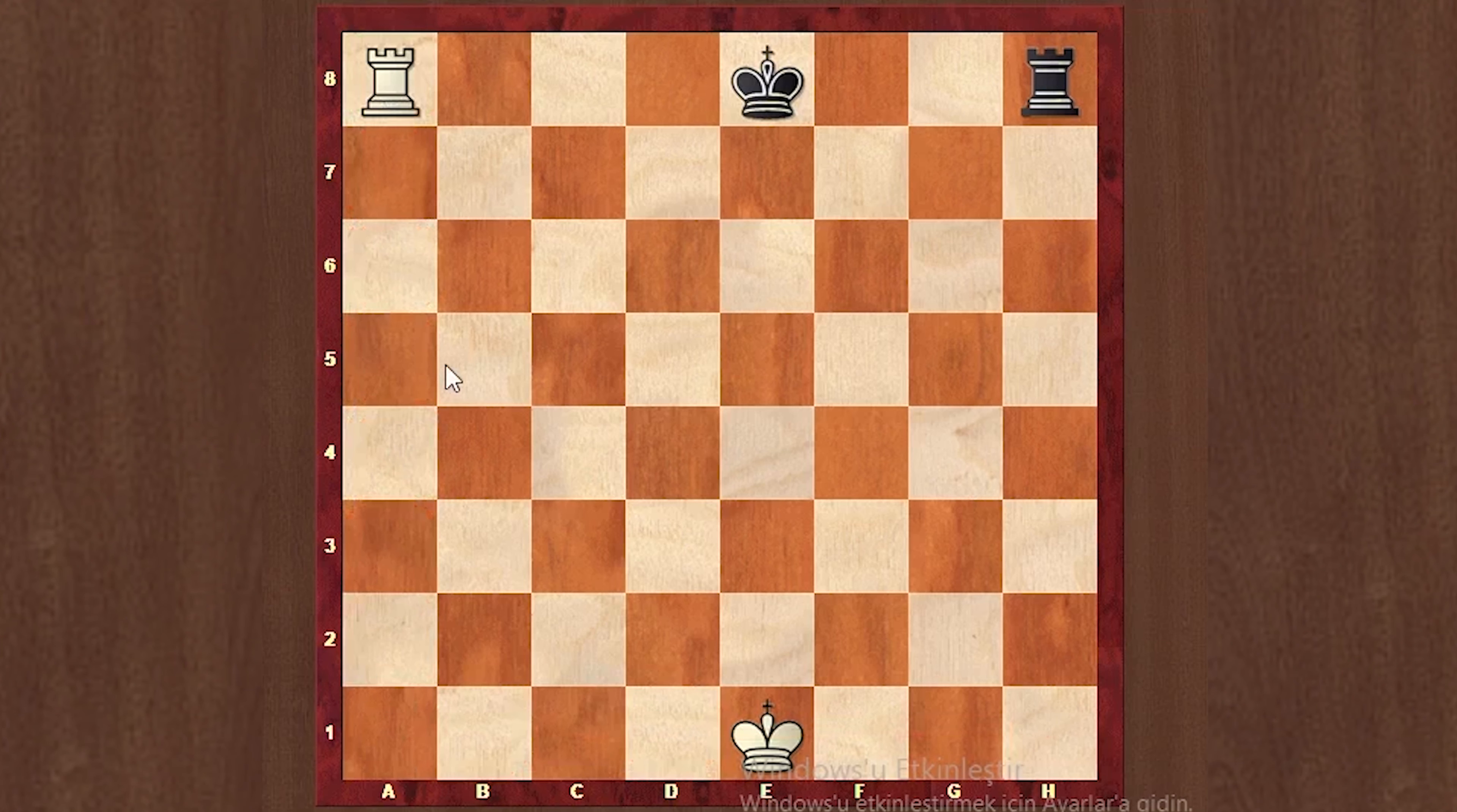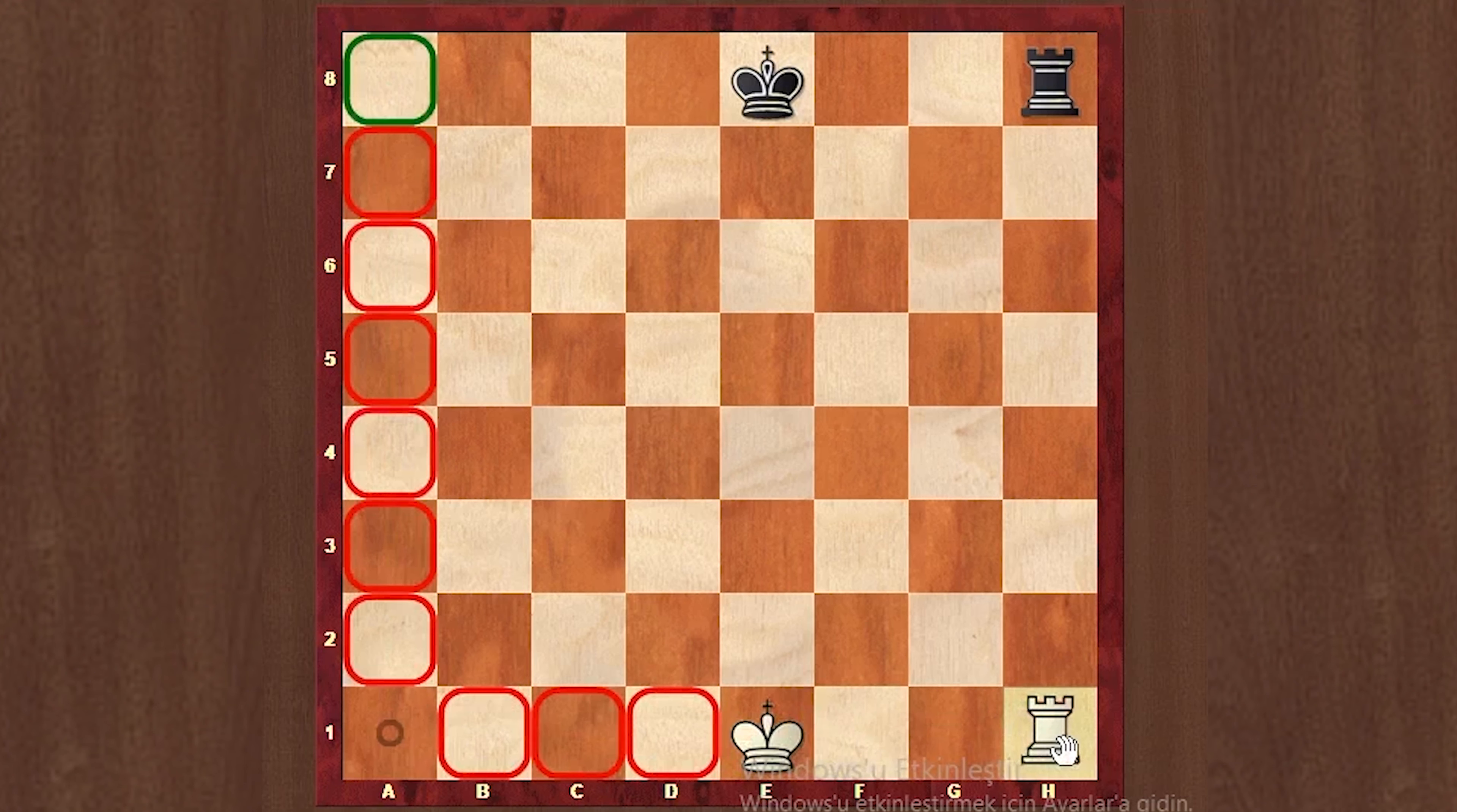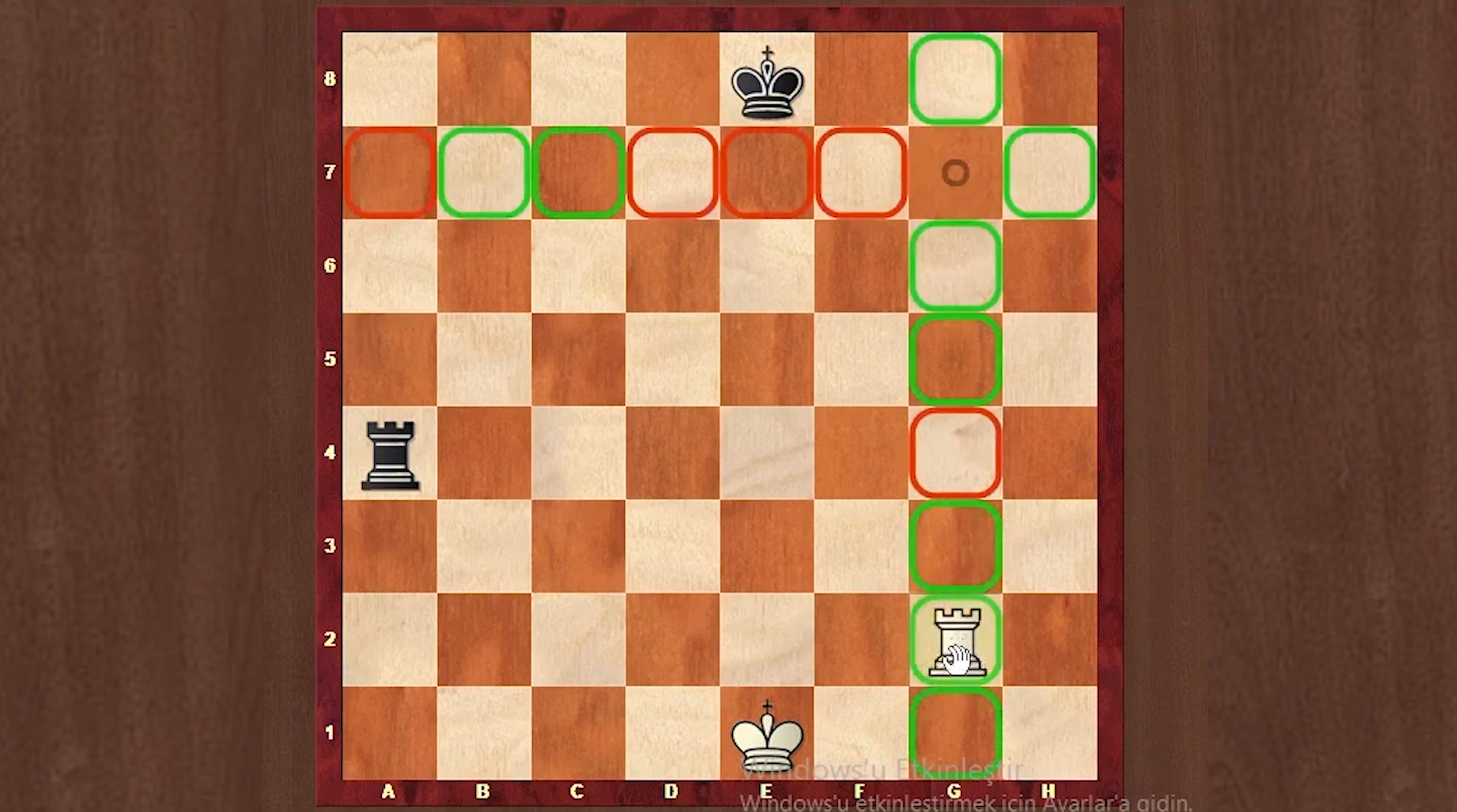The rook can move vertically or horizontally. Can the rook move horizontally by moving vertically? Yes, the rook can move vertically or horizontally and capture the opponent's pieces. However, I would like to point out that only the white stone will move.